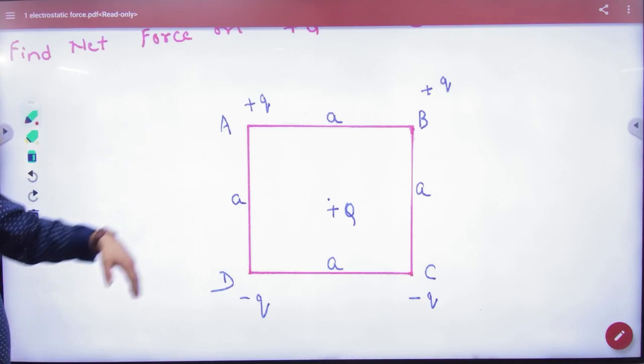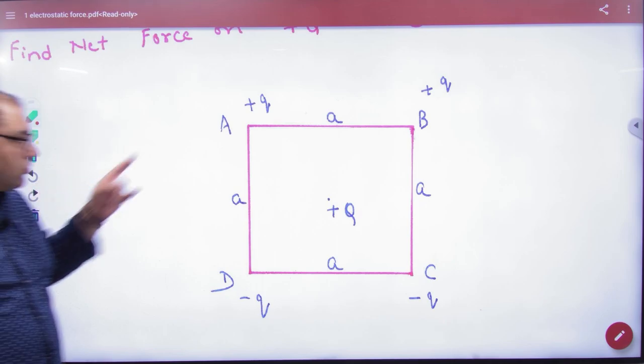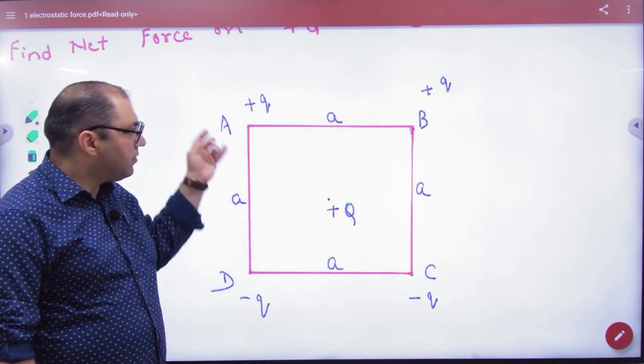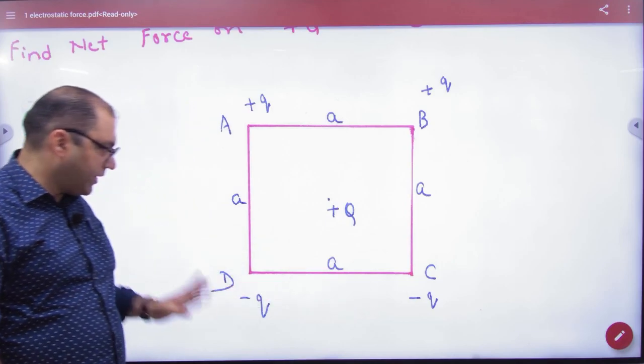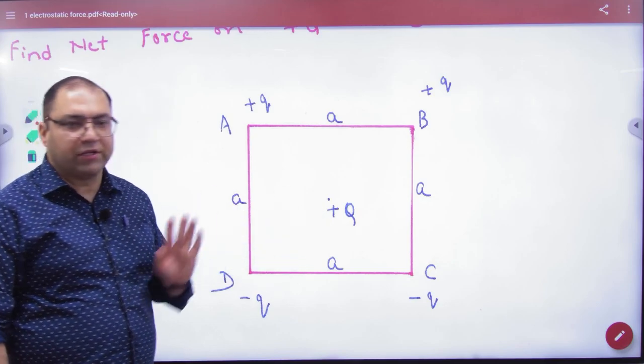So, there is a square given in this question and you have 4 charges given: plus q, plus q, minus q, minus q. With attention: plus q, plus q, minus q, minus q. And the 5th charge given is capital Q.